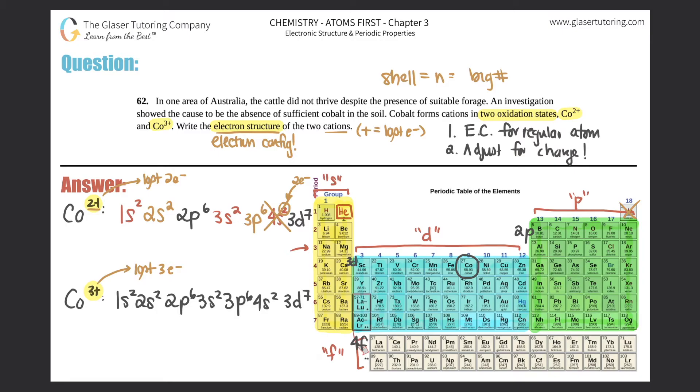So if you just had to rewrite this, cobalt two plus would be 1s² 2s² 2p⁶ 3s² 3p⁶, 4s² is now gone, and then it's 3d⁷. That's your answer for the two plus.